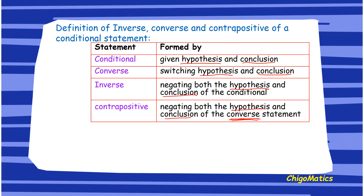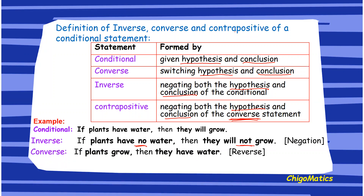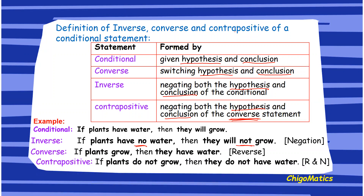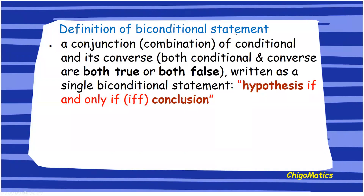Let us look at an example where the conditional statement is: if plants have water, then they will grow. The inverse — simply negating the hypothesis and the conclusion — is: if plants have no water, then they will not grow. The converse — switching the hypothesis and the conclusion — is: if plants grow, then they have water.